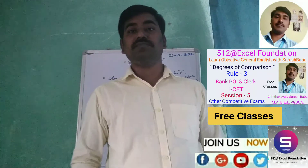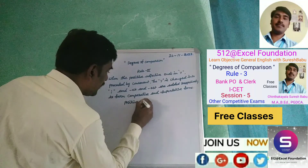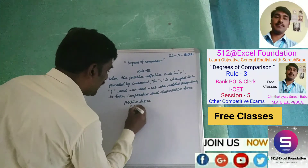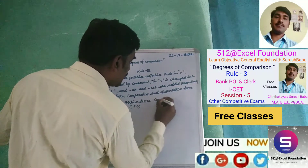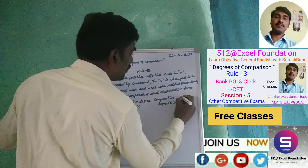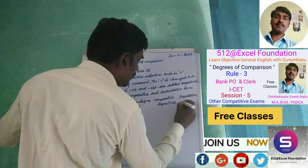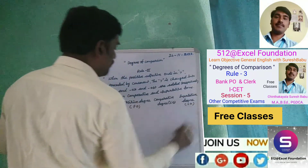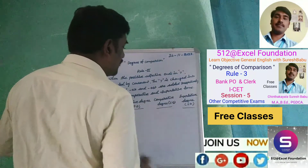That's how we get the positive degree. The first form is the positive degree (PD). Then the comparative degree (CD). Then the superlative degree (SD). So we have: positive degree, comparative degree, superlative degree.